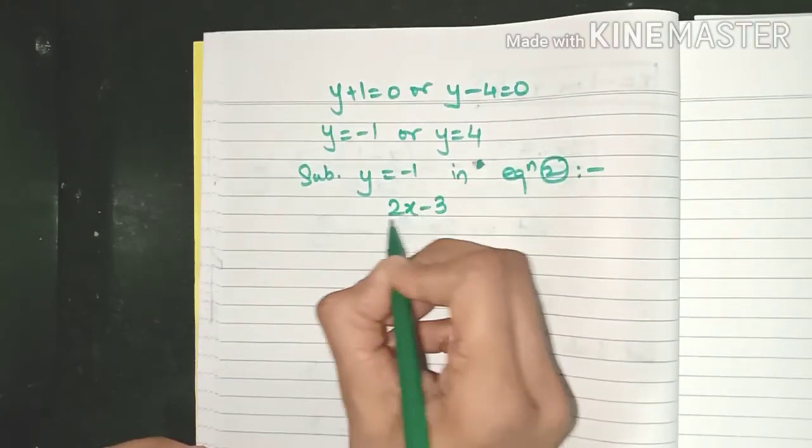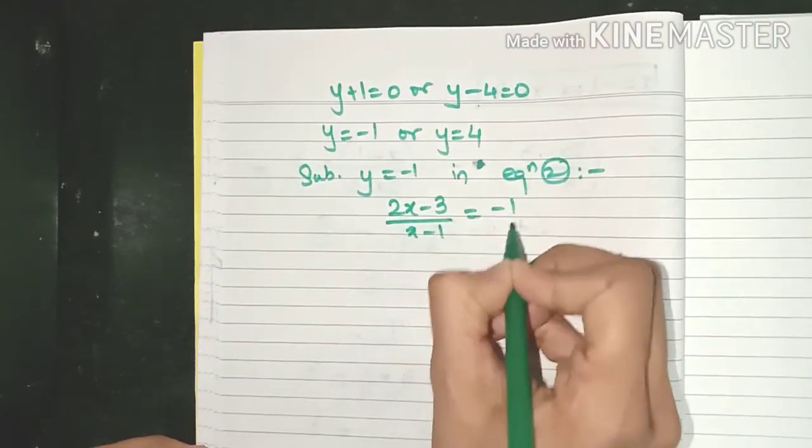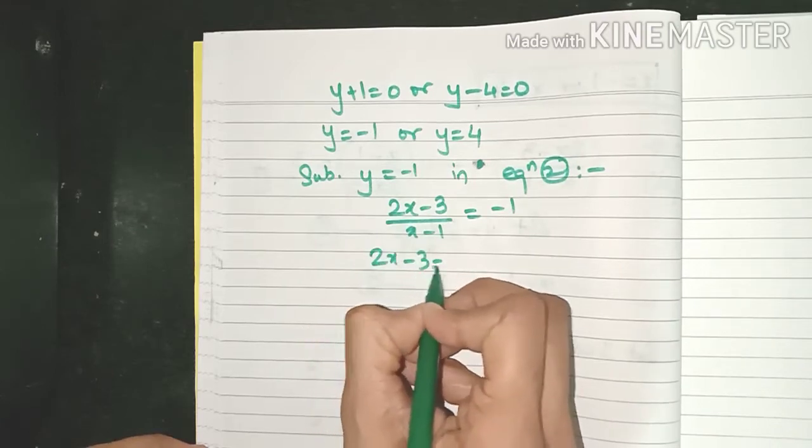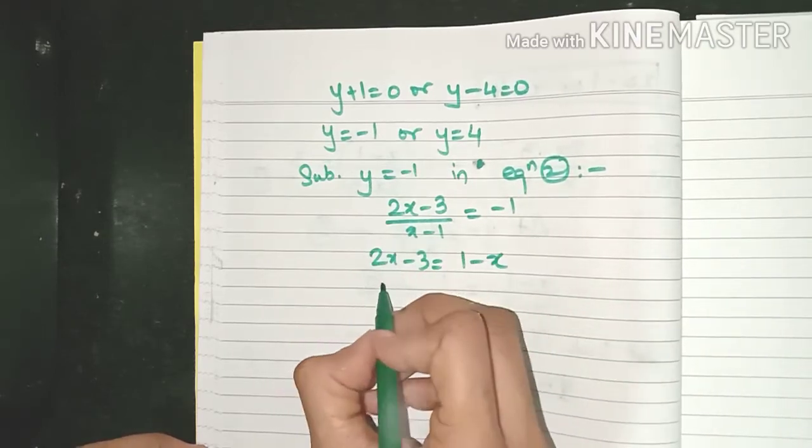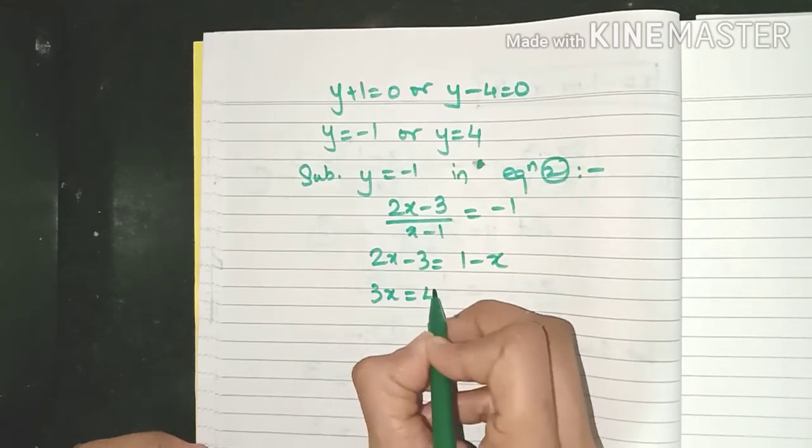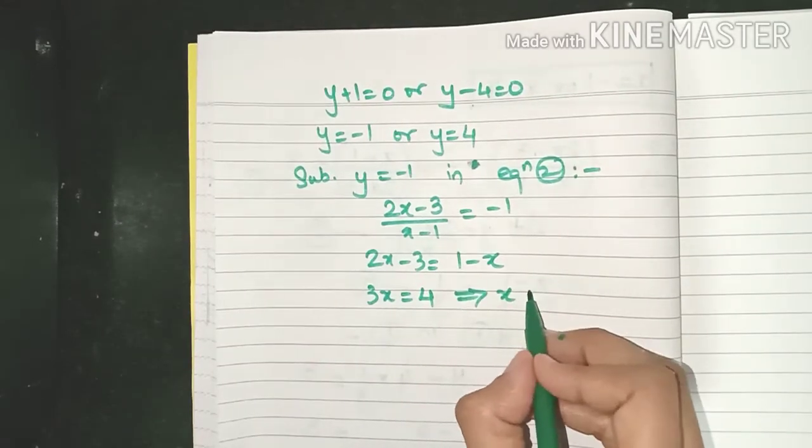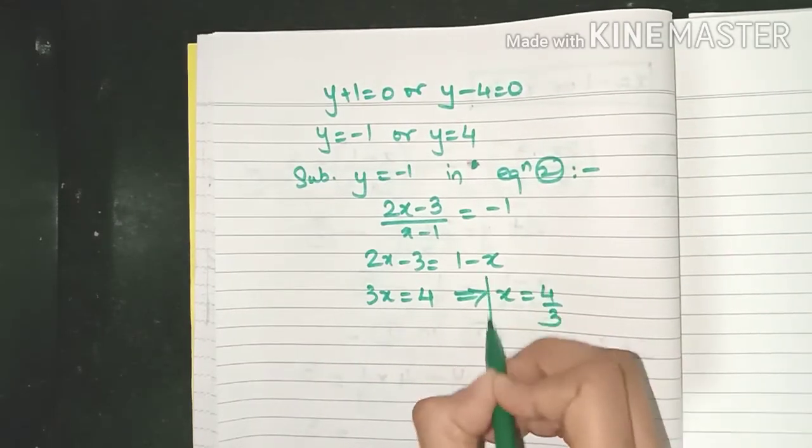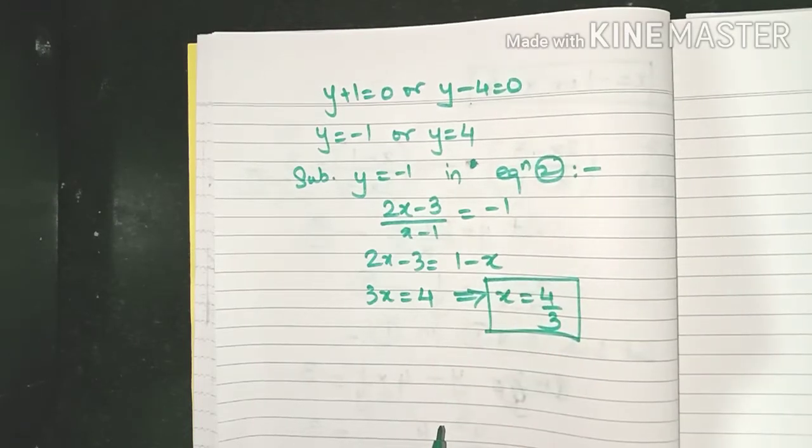We will get (2x - 3)/(x - 1) = -1. Let's do the cross multiplication. 3x is equal to 4. So this implies x is equal to 4/3. This is one value of x which we have got.